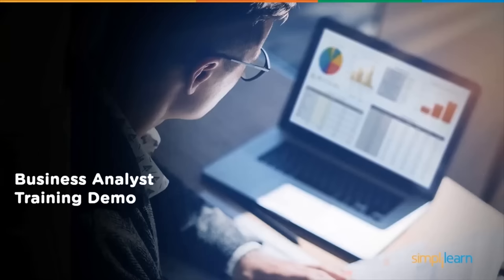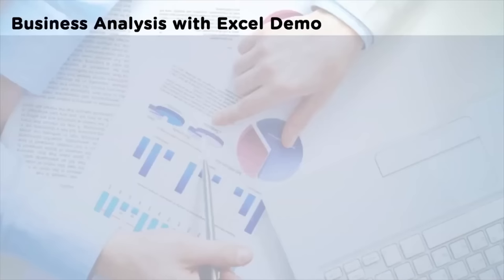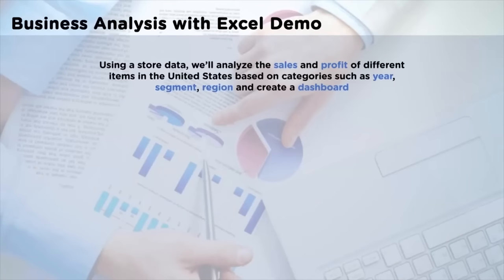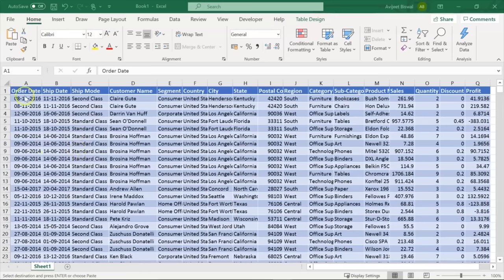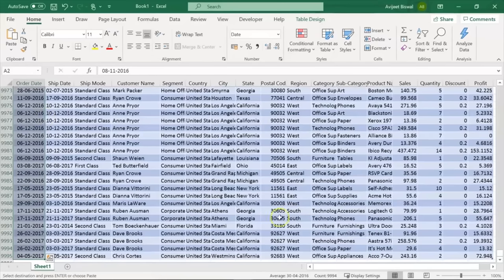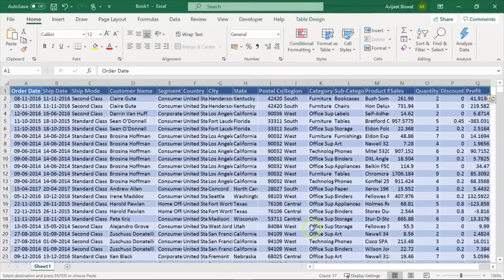Let's look at our demo on business analyst training. Business analysts often work on structured data using Excel to prepare reports and dashboards. They create pivot tables and pivot charts to summarize and analyze data, find trends and insights, and make critical decisions. In this demo, we will work on a sales dataset from the United States and analyze the total revenue, total profit, and quantity sold for different categories and subcategories of products across various regions, segments, cities, etc. The dataset has nearly 9,994 rows and 17 columns, including order date, shipment date, shipment mode, customer name, segment, country, city, state, product category, subcategory, product name, sales, quantity, discount, and profit.